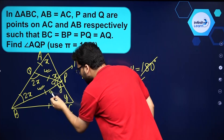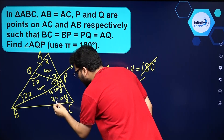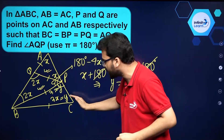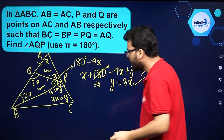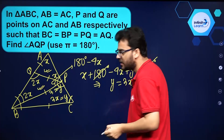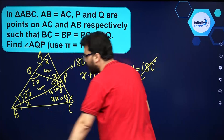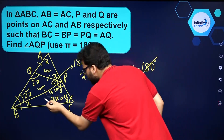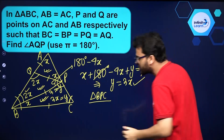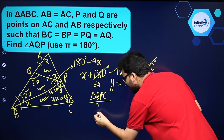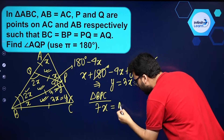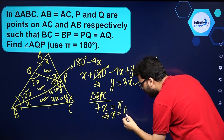So y equals 3x, and this y is also 3x. Now since AB is equal to AC, angles opposite to equal sides of the triangle are equal, so this angle must also be 3x. That means if this angle is 2x, this part has to be x. Using the angle sum property in triangle BPC: 3x plus 3x plus x equals 7x, and since the sum of angles in a triangle is 180 degrees, which equals pi, x equals pi by 7.